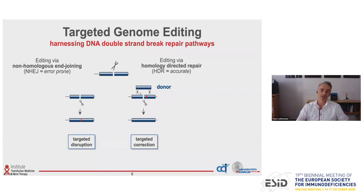The other DNA repair pathway which can be harnessed is based on homology combination and is called homology-directed repair. It can be used to correct genes when you co-deliver a donor DNA which shares homology to your target site. This allows you to transfer sequence information from your donor to your gene of interest, for instance to correct the mutation.